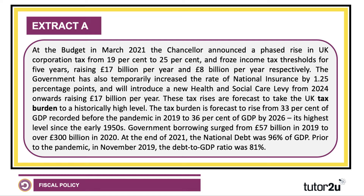There's also been a temporary increase in the rate of national insurance by 1.25 percentage points — a one-year increase — but it's going to be replaced by a new health and social care levy from 2024 onwards, again raising some significant sums. These tax rises, along with others, are going to take the UK tax burden to historically high levels, from 33% of GDP in 2019 to 36% by 2026.